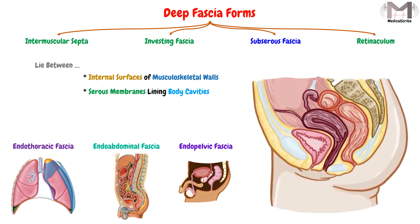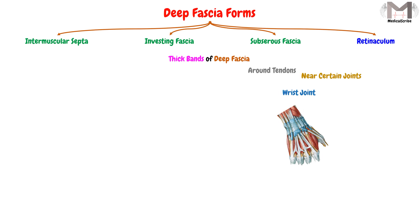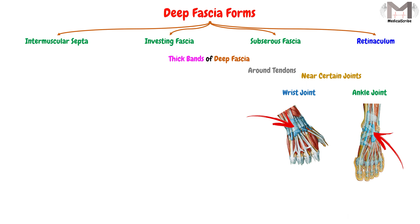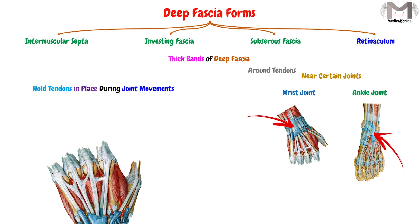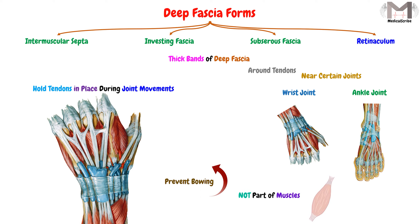The last form of the deep fascia is the retinacula. These retinacula are thick bands of deep fascia found around the tendons near certain joints, such as the wrist joint and the ankle joint. They hold the muscle tendons in place during joint movements and prevent them from bowing. Keep in mind that these retinacula are not part of the muscles — their role is to hold the tendons in place during joint movements.